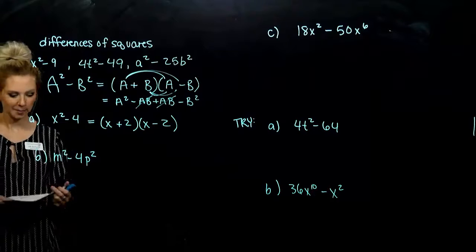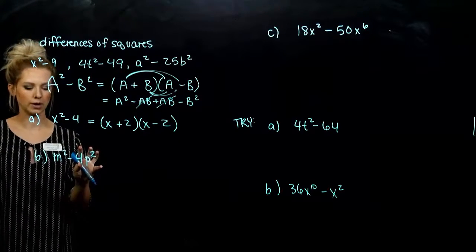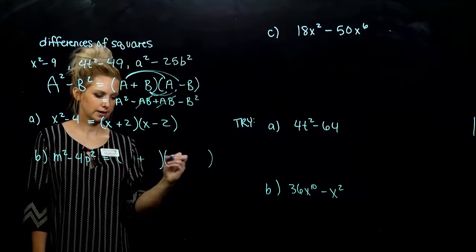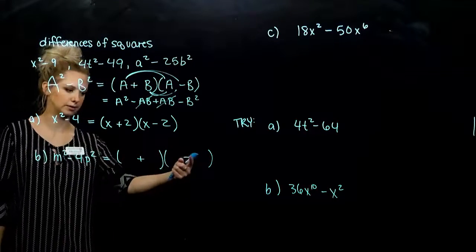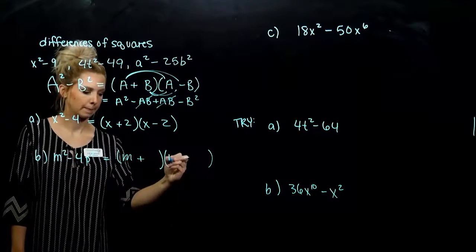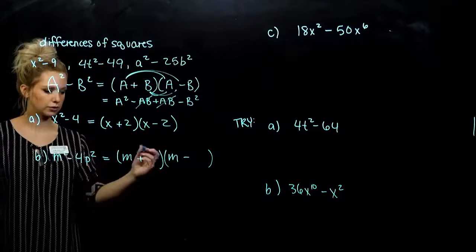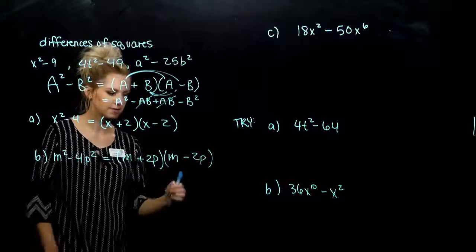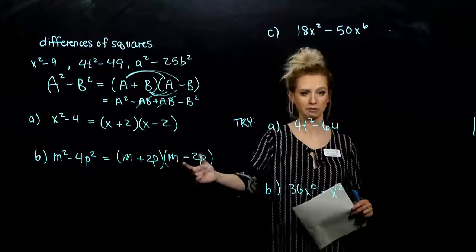Part B — I've got a perfect square and a perfect square and a difference, so how will it factor? We need to alternate signs — the order doesn't matter, we could put the minus first and plus second. I need the square root of the first and the square root of the second. The square root of 4 is 2, and the square root of p squared is p. So sometimes the factors are more involved rather than just one constant; it might be the product of two of them.